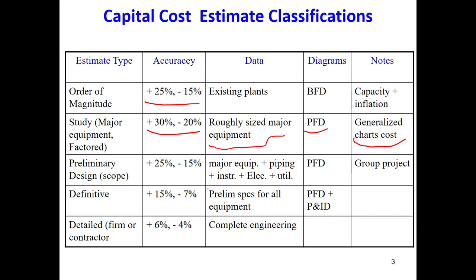We can go even further into detail by sizing different major equipment and doing some calculations for piping and instrumentation, using a preliminary design. This still has a high error — between minus 15 to plus 25 percent.